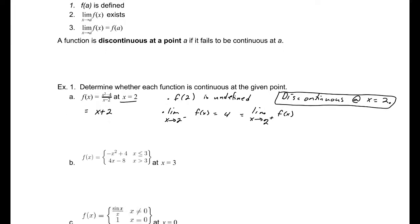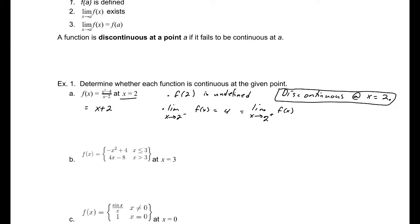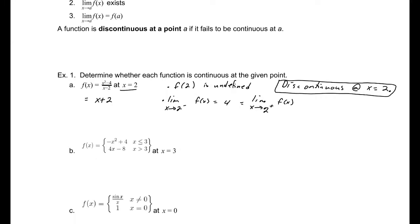If the function is defined, we might continue moving on. Part b: is f of 3 defined? Well, x equals 3 appeals to this part of our piecewise function. Let's plug 3 in there because it is a quadratic. That would be negative 9 plus 4, so that's negative 5. f of 3 is negative 5. So it is defined there.